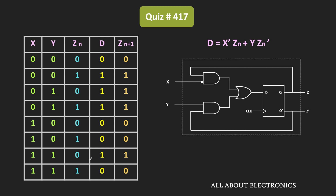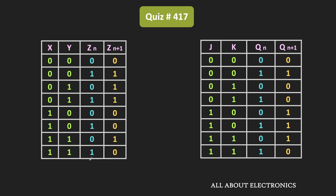Let us compare this table with the truth table of the JK flip-flop. When both X and Y inputs are 0, the flip-flop retains its current state, which is very similar to the JK flip-flop. Similarly, when both inputs are 1, the output of the flip-flop is toggled — if Zn is 0, in the next state it becomes 1, and if Zn is 1, in the next state it becomes 0 — which is also identical to the JK flip-flop behavior.